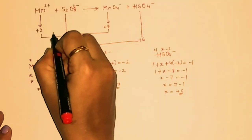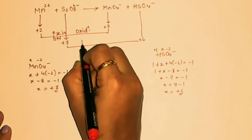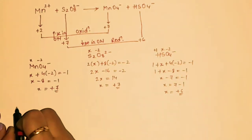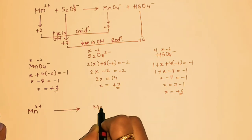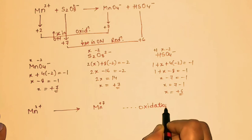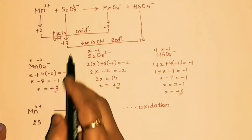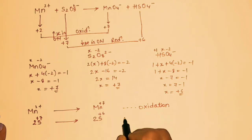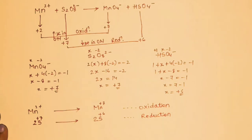There is an increase in oxidation number for manganese from +2 to +7, therefore it is oxidation. For sulfur, there is a decrease in oxidation number from +7 to +6, therefore it is reduction. Step 1: Mn²⁺ → Mn⁺⁷ (oxidation); 2S⁺⁷ → 2S⁺⁶ (reduction), balancing sulfur atoms.